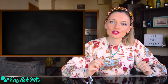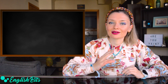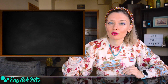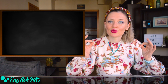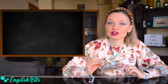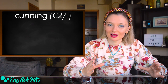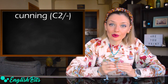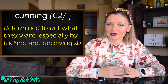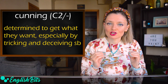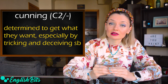So first, we're going to look at three negative adjectives and then at seven positive ones. The first C2 adjective on my list today is cunning. Cunning people are those who are determined to get what they want, especially by tricking and deceiving someone.